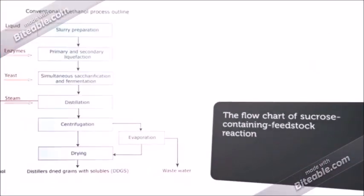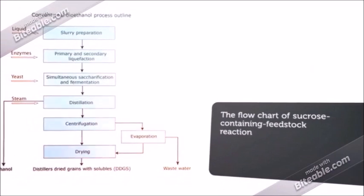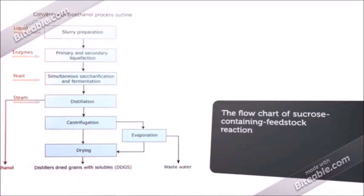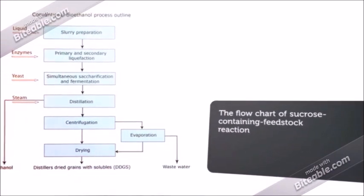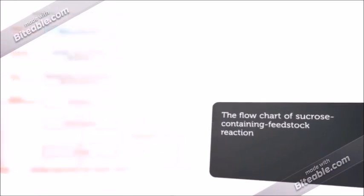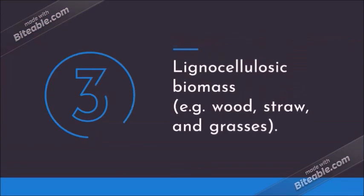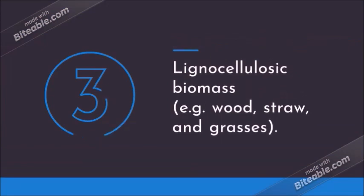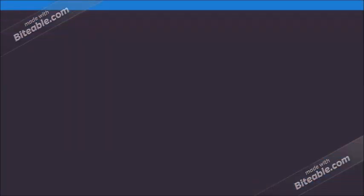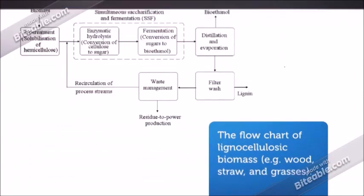This flow chart shows the conventional process of bioethanol production using sucrose-containing material. The third type of feedstock is biomass that has lignocellulosic material such as wood, straw, and grass.